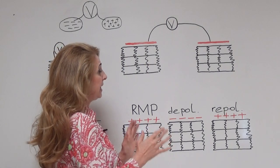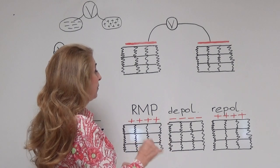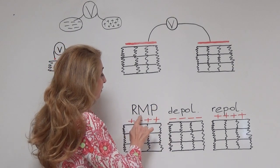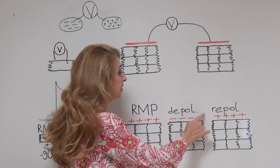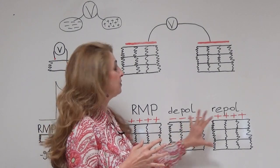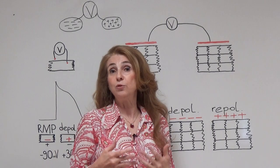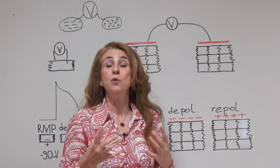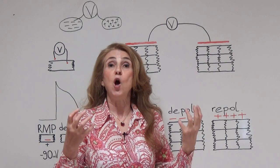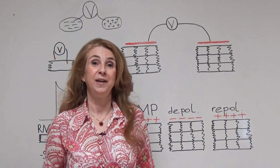We can see here — and I am stressing this point — that in extracellular recording we are interested in the charges outside the cells. Now that we have understood what happens to one group of cells, we can move on to the electrocardiography recording, which compares the outer charges of two groups of cells.